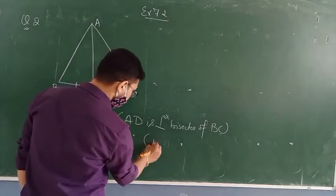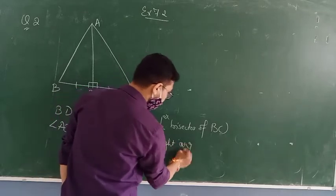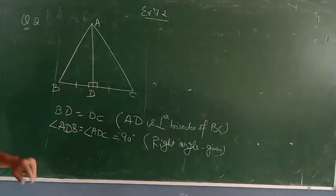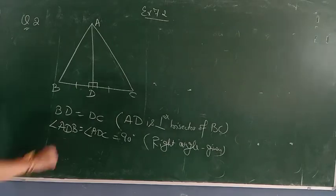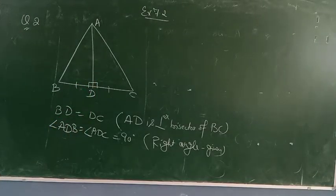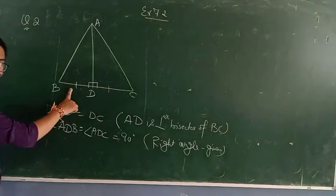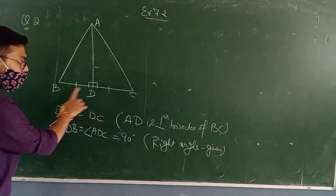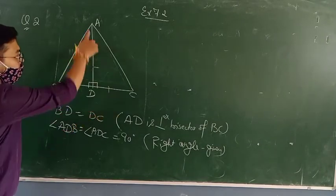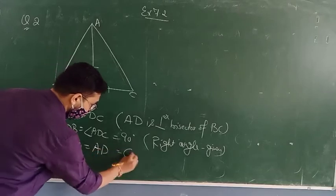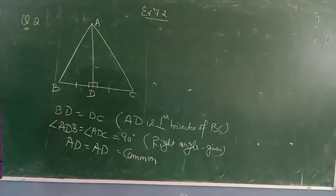The reason is right angle — this is given in the question itself, that AD is the perpendicular bisector. So the two hints are: first, BD equals DC; and second, these two angles are equal, both being 90 degrees. So this side equals this one, this angle equals this one, and this side AD is common.